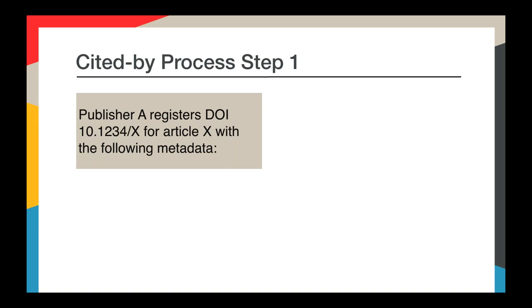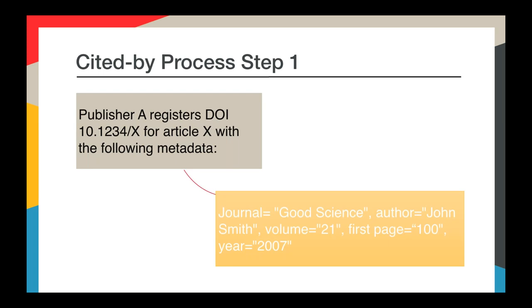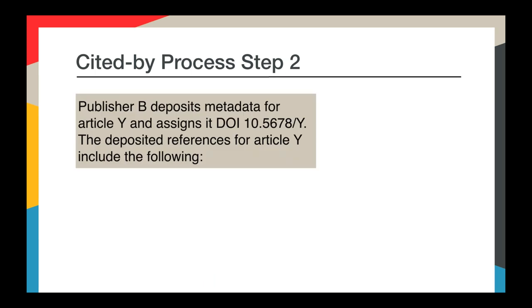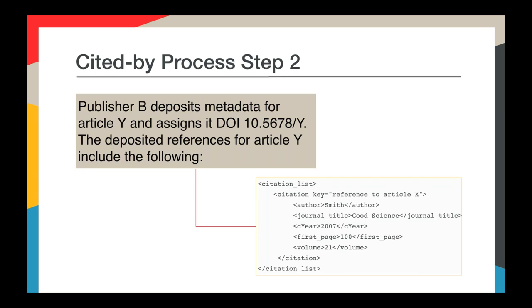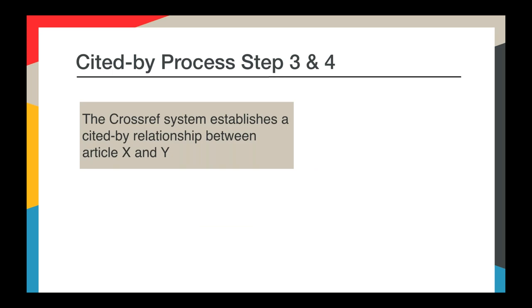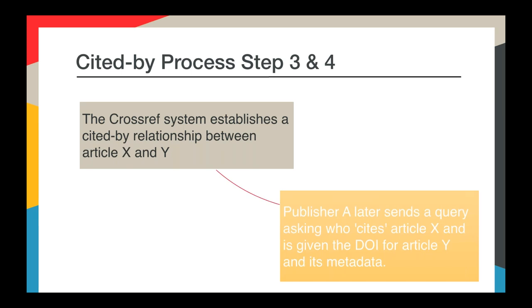Let's dive into the process step by step. In Step 1, Publisher A registers a DOI for Article X — titled 'Good Science' by author John Smith. Next, Publisher B deposits metadata for Article Y and assigns a DOI; the deposited references for this article include the previous article by John Smith. The Crossref system then establishes a Cited by relationship between Article X and Article Y. Later, Publisher A sends a query to Crossref asking who cited their article, and Crossref returns the DOI for Article Y and its metadata.